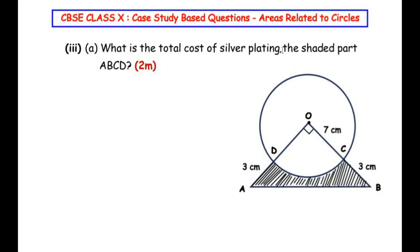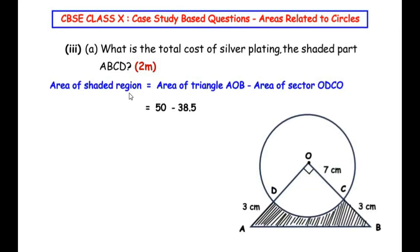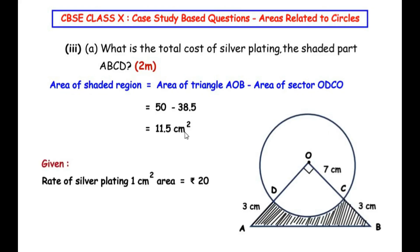The third sub question asks: what is the total cost of silver plating the shaded part ABCD? The shaded region is the area of right angle triangle AOB minus the area of sector ODCO. That is, if we cut out the sector from the right angle triangle, we get the shaded region. Area of shaded region = 50 − 38.5 = 11.5 centimeters square.